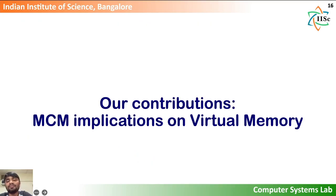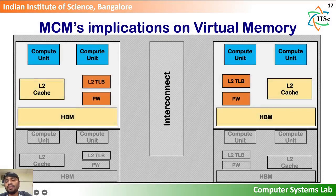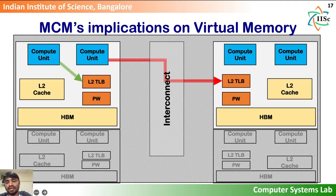While the implications of MCM design on data accesses have been studied previously, we, for the first time, study the implications of MCM design on virtual memory. At a high level, we find there are two major implications of non-uniformity on MCM GPU virtual memory. First, L2TLB lookups may be local — i.e., to the same chiplet as the request origin — or remote, i.e., to a different chiplet.